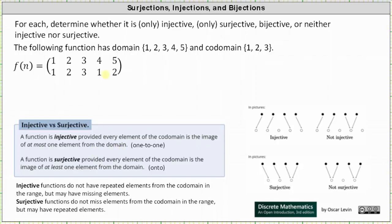The function is surjective because every element of the codomain is an image of at least one element from the domain. The elements 1 and 2 are images of two elements from the domain, and the element 3 from the codomain is an image of one element from the domain. The function is only surjective.